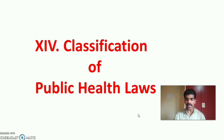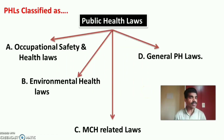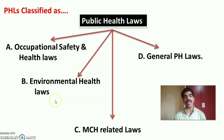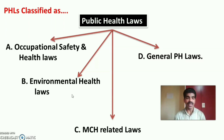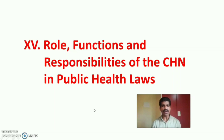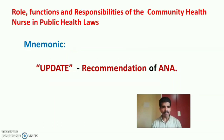Next is the classification of public health laws. Public health laws can be classified into four broad categories: Occupational Safety and Health Laws, Environmental Health Laws, MCH-related Laws, and General Public Health Laws. This will be explained in detail in the second part of the video. The last session of today is the Role, Functions and Responsibilities of the Community Health Nurse in Public Health Laws. A mnemonic has been created for that: 'Update Recommendation by ANA' — that is, American Nurses Association — meaning all community health nurses have to update their knowledge in relation to public health laws.